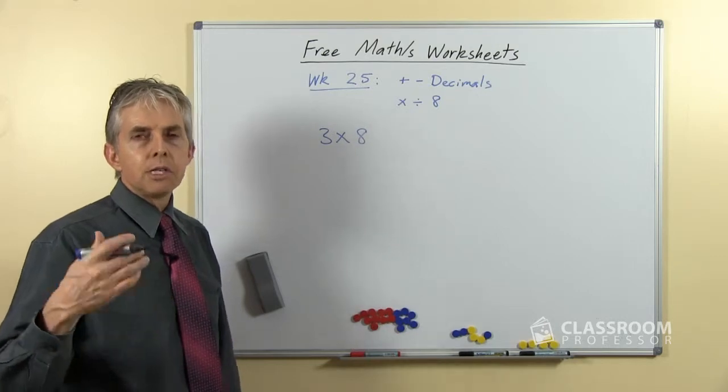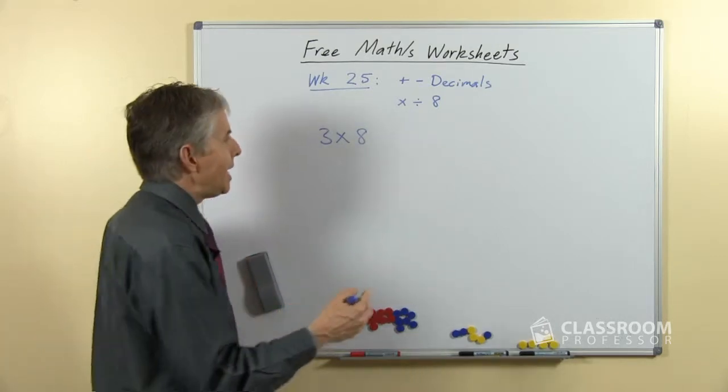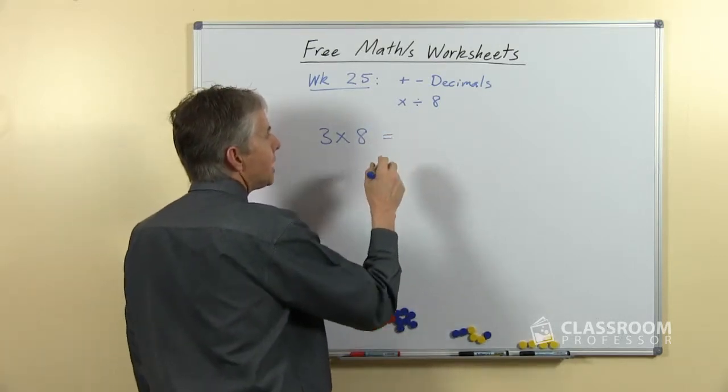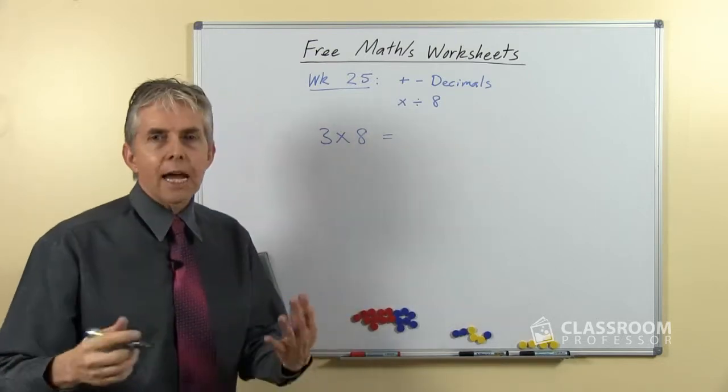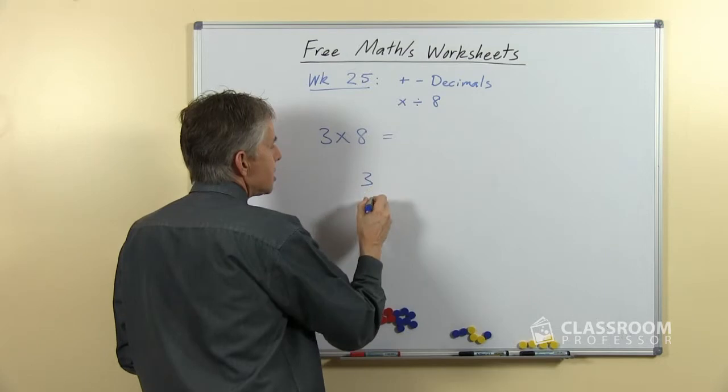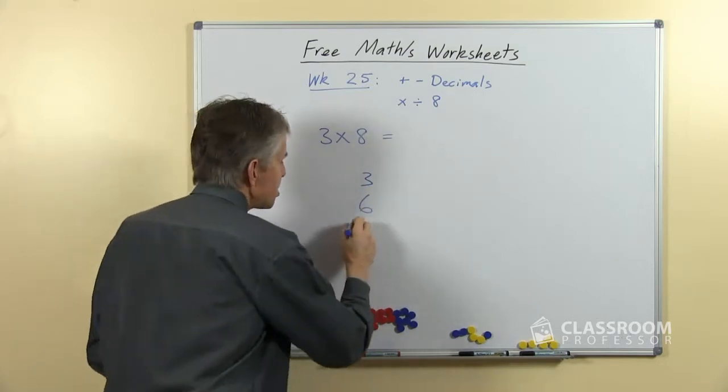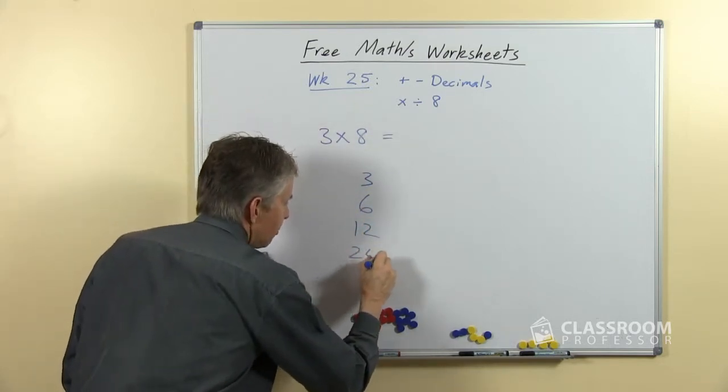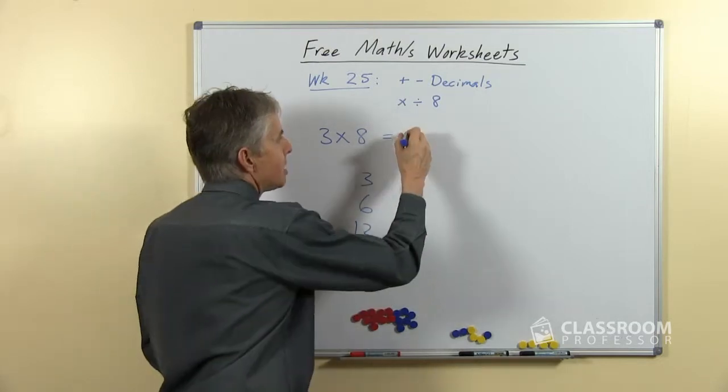The strategy that we use is double, double, double. It takes a bit of time, but it's accurate, it's going to get you the right answer. So let's say, start with 3, double that will give you 6, double 6 will give you 12, double 12 will give you 24 and there's your answer.